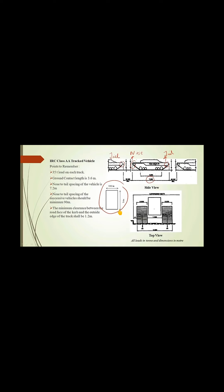This is the IRC Class AA tracked vehicle, which we refer to for designing bridge deck slabs. The curb clearance distance should be a minimum of 1.2 meters. The 35-ton load on each track is used to find the bending moment and then design the slab. This completes the details of the IRC Class AA tracked vehicle.